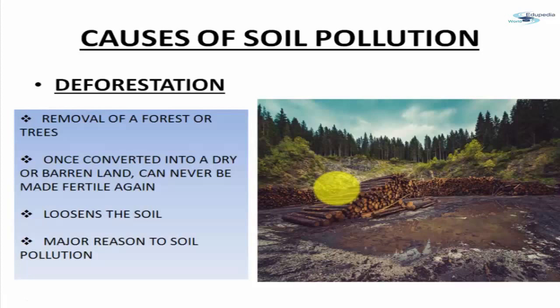Now let's discuss the causes of soil pollution. A main cause is deforestation — the removal or cutting down of trees and forests. What happens in deforestation? Once they cut down all the trees, soil erosion takes place because there are no more trees to hold the soil tightly to the ground. So when it rains, the soil is washed away — this is known as soil erosion.